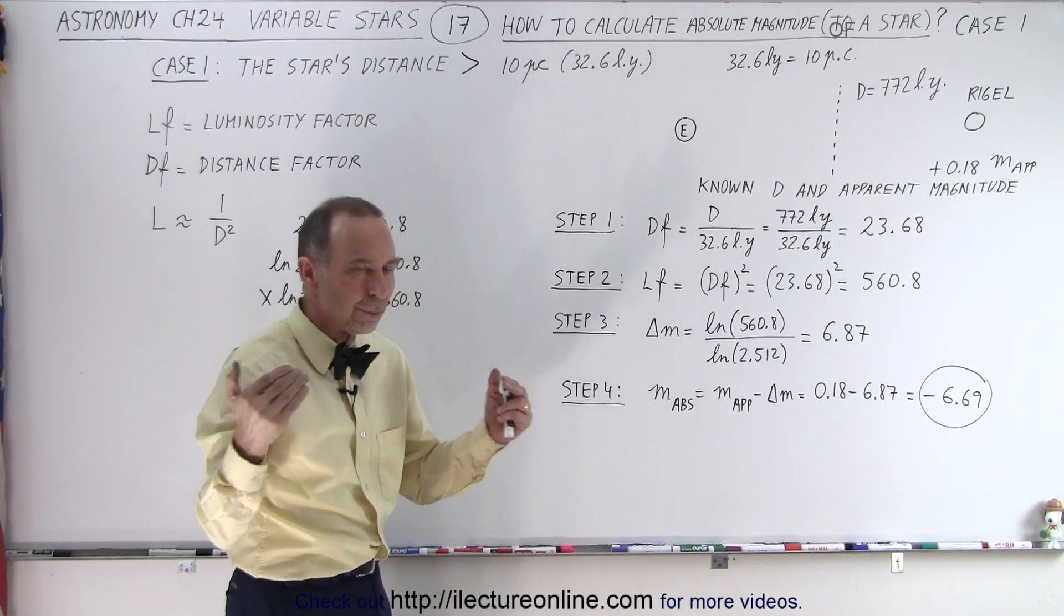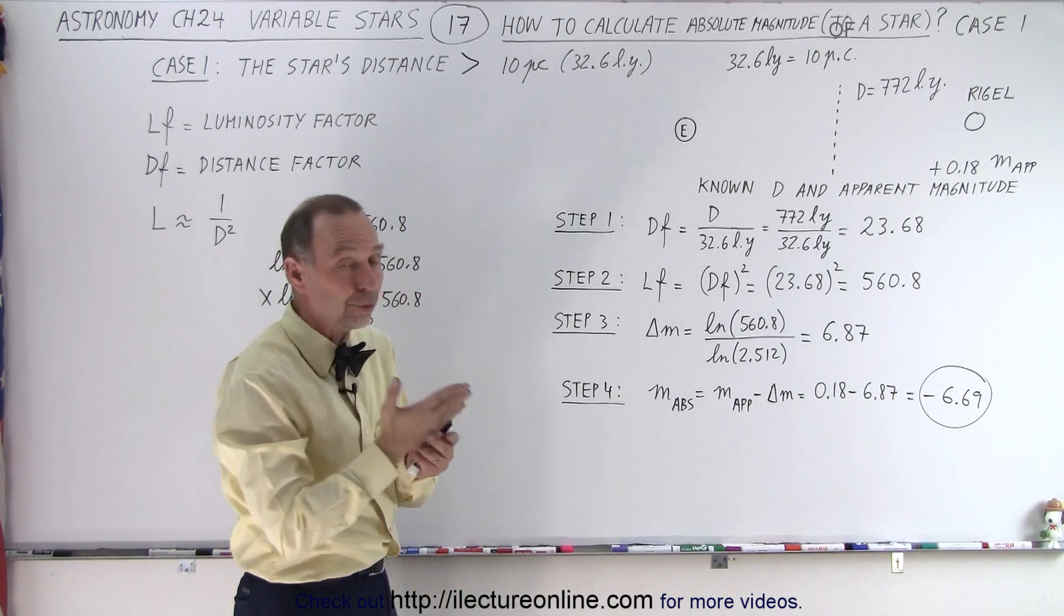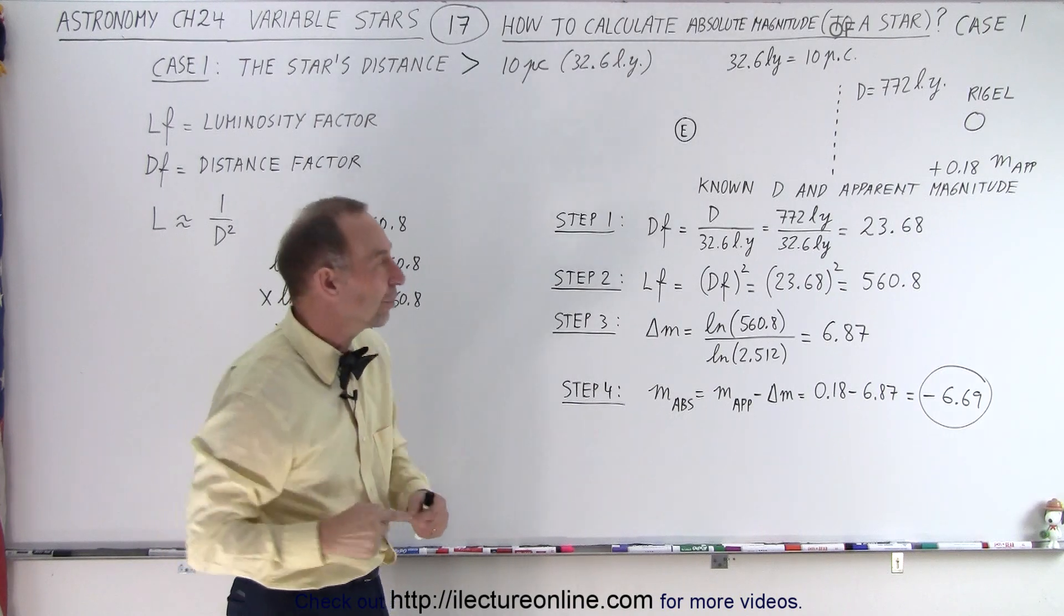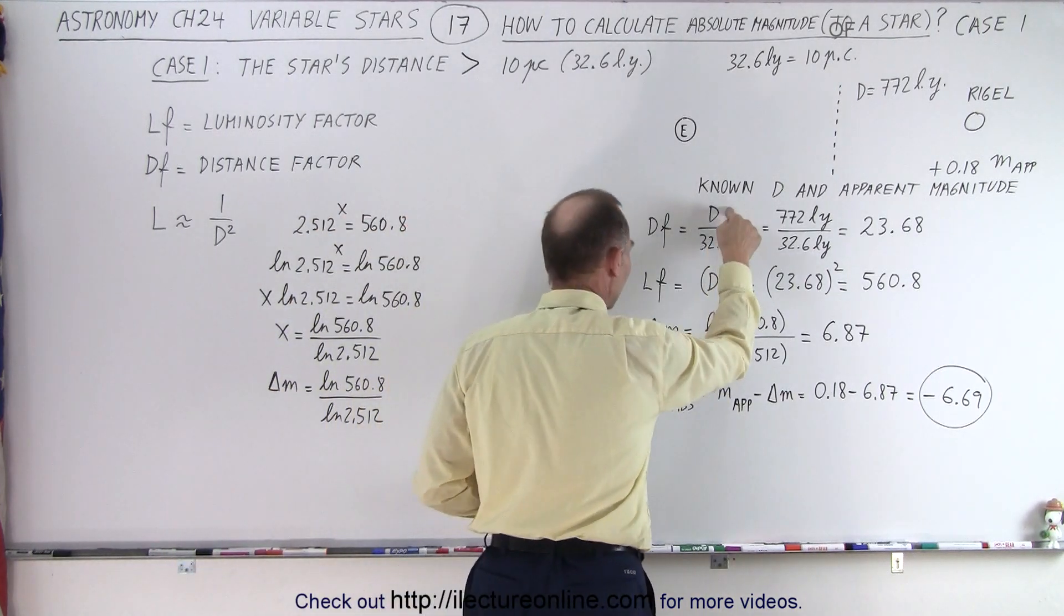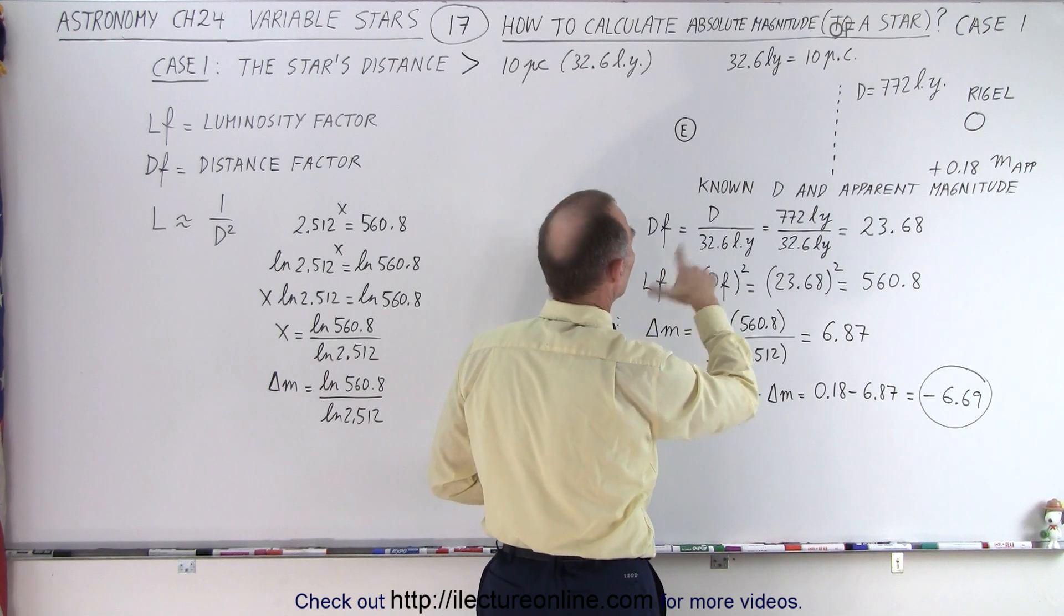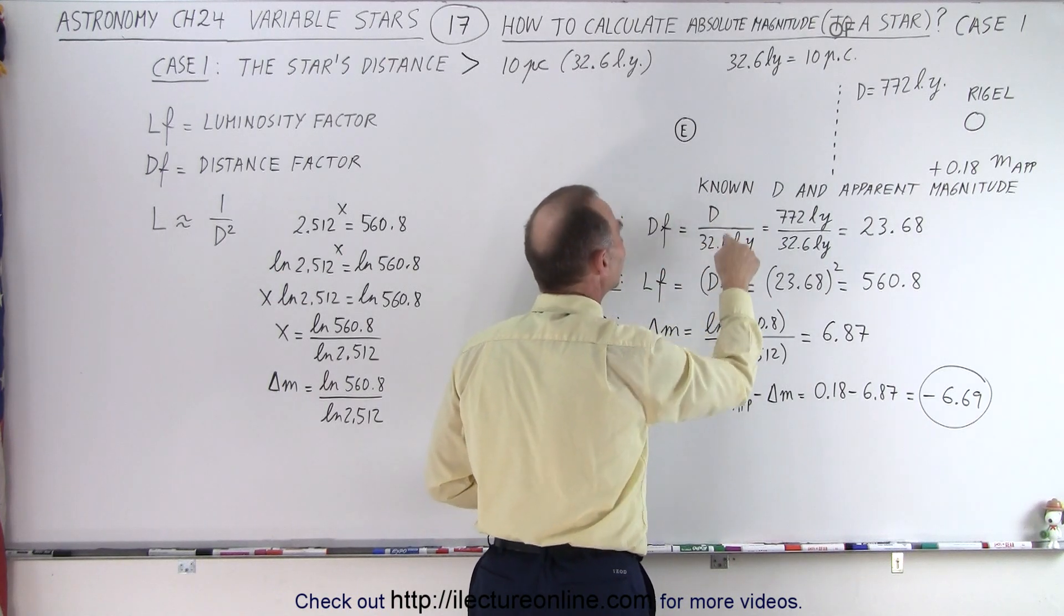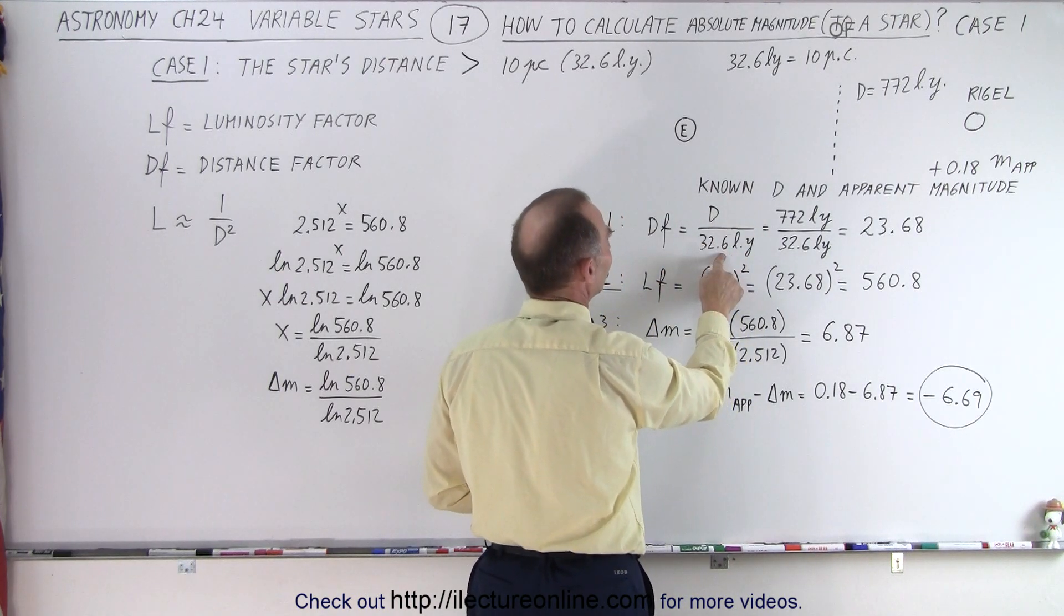So remember that last time we had to multiply the distance factor times 32.6. Since we're going backwards, we're going to divide the distance by the distance factor. Oh, I'm sorry, we're going to find the distance by the standard distance, 32.6 light years.